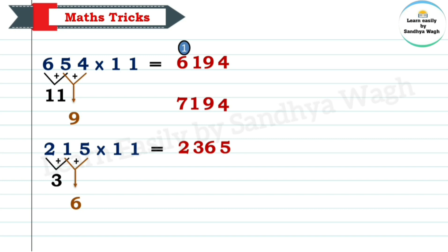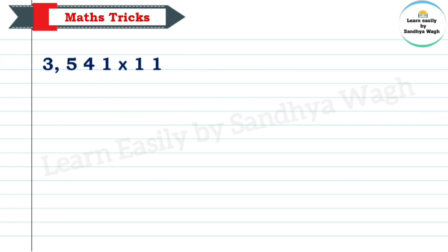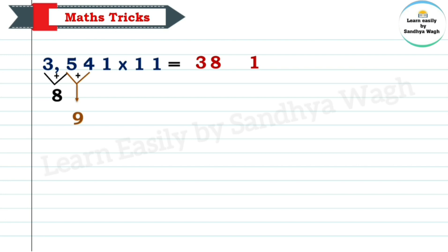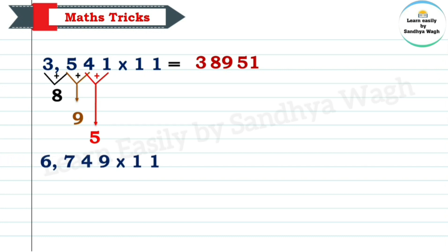Now let's take a 4-digit number and multiply that number by 11 using our trick. Our 4-digit number is 3541 multiplied by 11. First digit and last digit. Next, 3 plus 5 is equal to 8. Let's write 8 after 3. Now let's add 5 and 4. 5 plus 4 is equal to 9. Let's write 9 after 8. Next, 4 plus 1 is equal to 5. Let's write 5 over here. Our final answer is 38,951.